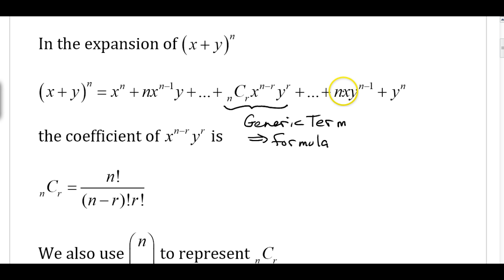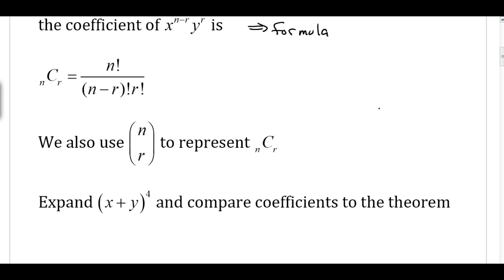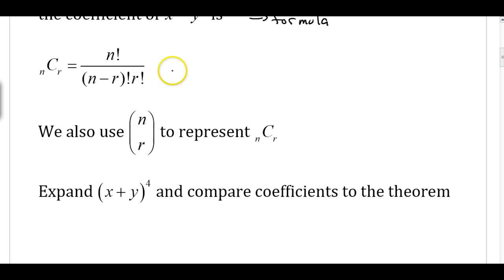The last two terms of this expansion are n times x times y to the n minus 1, plus y to the n. We looked at some patterns for expanding binomials in class — patterns with the coefficients and patterns with the exponents. We also looked at n choose r, and you can use your calculator to figure this out by going to the math and probability menu. We just have two different representations for n choose r.